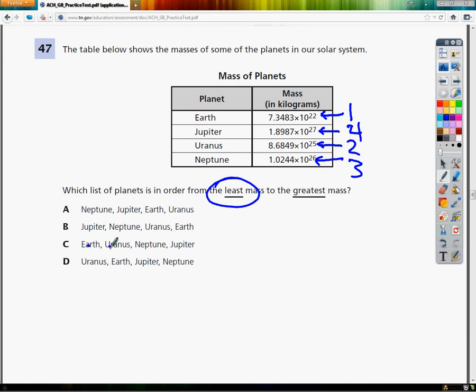So the answer to number 47 is C. Don't fall down the rabbit hole of picking the smallest number that's in front of the exponent. In scientific notation, the exponent is king, so make sure you focus on that number and not the other one. Otherwise, you're going to look kind of dumb, and you're not.